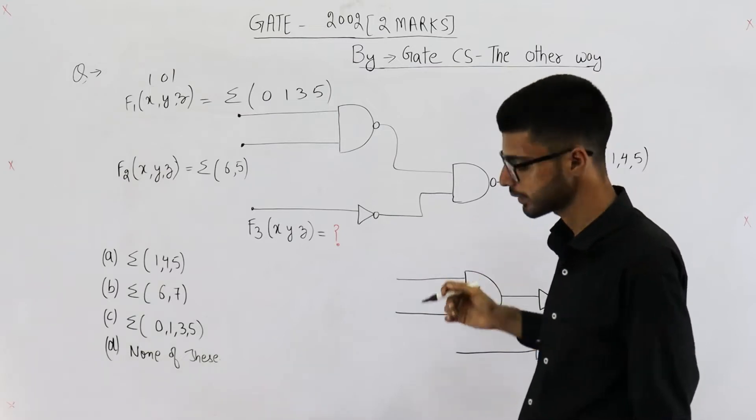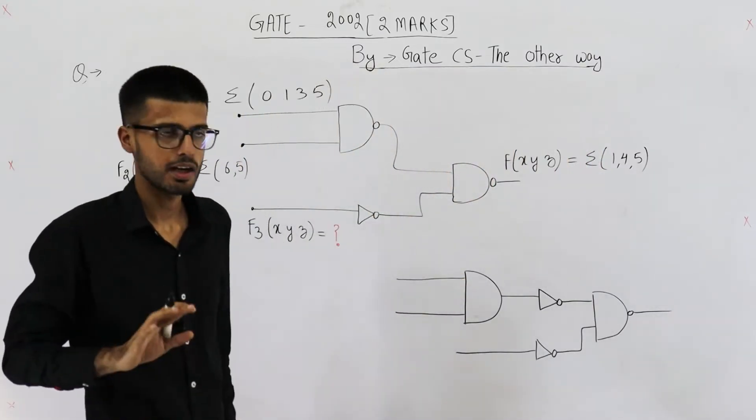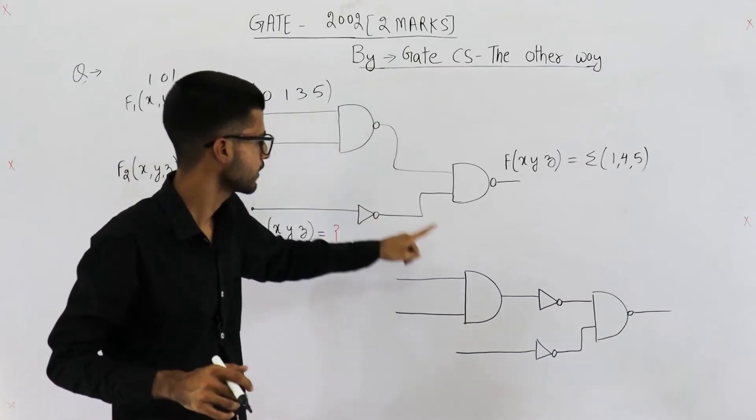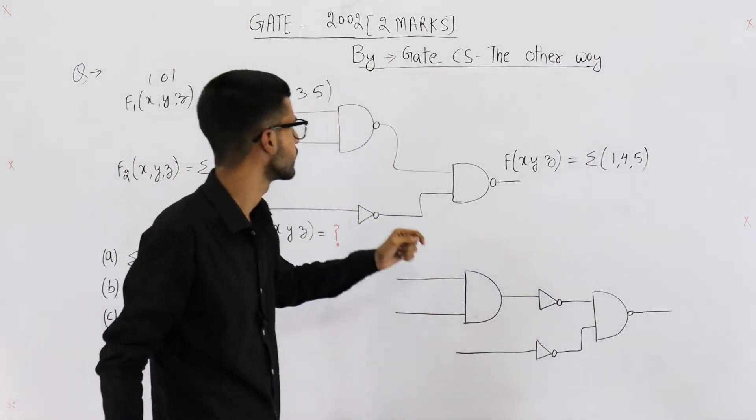We prefer AND and OR gates, so let's convert this circuit into a circuit of AND gates and OR gates. Now you see I've drawn the exact same circuit here. I have not changed anything.